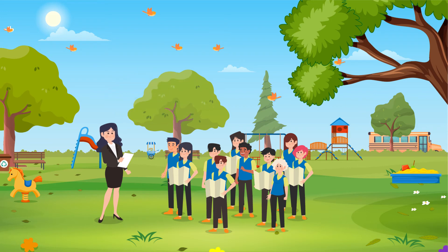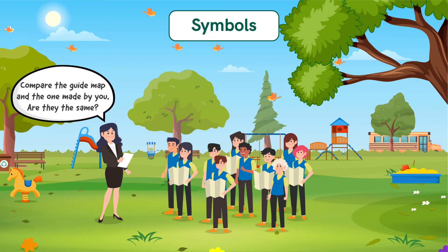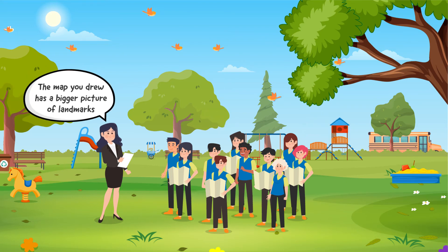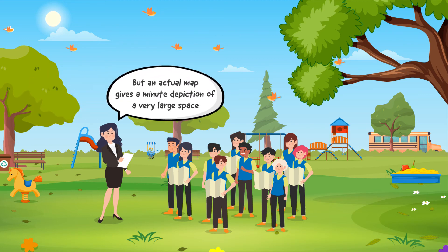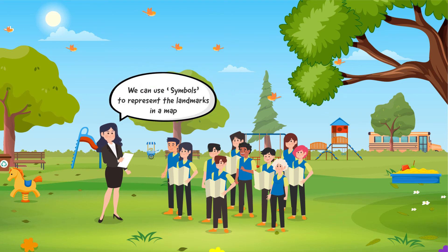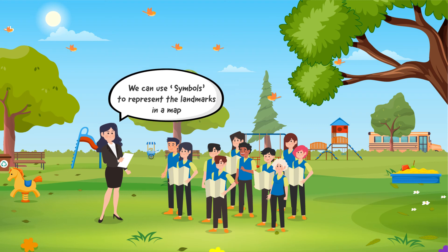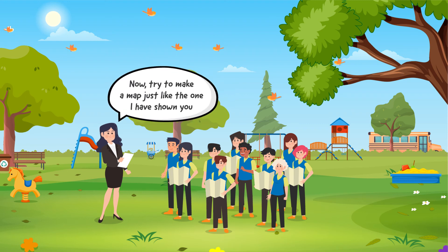Continue with enquiries to lead to understanding of symbols. Ask students to compare both the guide map and the one made by you — are they the same? Accept possible responses, then inform them that the map they drew has a bigger picture of landmarks, but an actual map gives a minute depiction of a very large space. State that we can use symbols to represent the landmarks in the map.